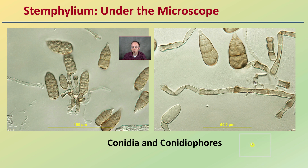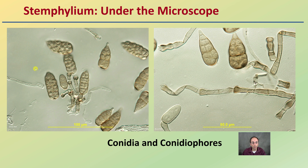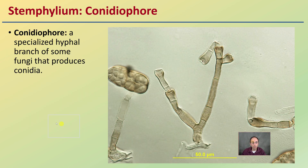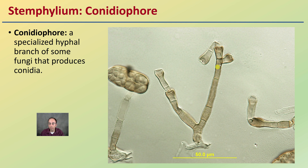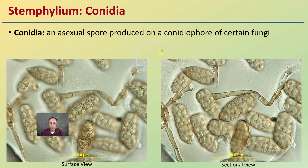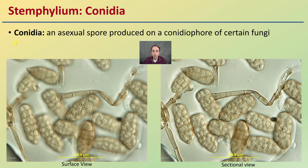When looking at it under the microscope, we have the conidia on the left and the conidiophores on the right, giving an idea of their size and structure. The conidiophores are specialized hyphal branches of some fungi that produce conidia, shown here at regular spacing. The conidia are the asexual spores produced by certain fungi. Two great images are shown: the surface view displaying the nice textured surface of the conidia of Stemophilium, and the sectioned view showing what it looks like in cross-section. Another good visual identification tool if you can access a microscope.